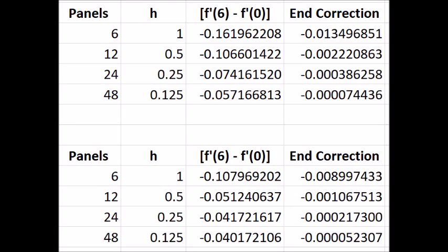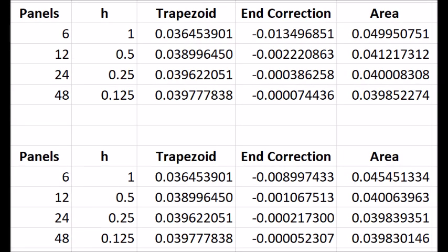I pulled the last column from the previous slide and reposted it in the third column of this table. Each entry in the fourth column is the product of the value to its left, and h squared over 12. That comes from our end correction term seen in the formula at the very beginning of this lesson. Lastly, I take the area from our uncorrected trapezoid rule, third column, and subtract the end correction, fourth column. That gives us a new approximation for area, fifth column.